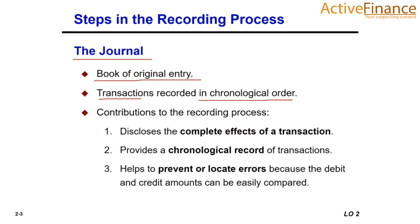Every company has the most basic form of journal, which is a general journal. A general journal typically has spaces for dates, account titles, explanation of the transaction, and a reference column linking to business documents such as a sales slip, check, or bill. It also has two amount columns — debit and credit. In coming slides we will practically demonstrate the journal.